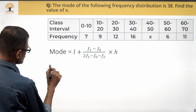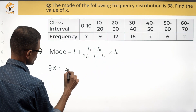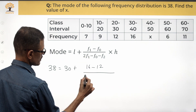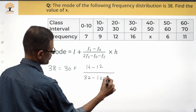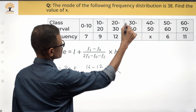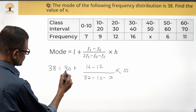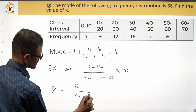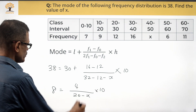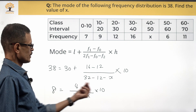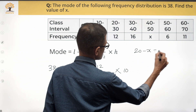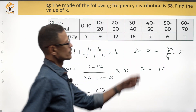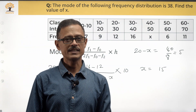So: 38 = 30 + [(16 − 12) / (2×16 − 12 − X)] × 10. That gives 8 = [4 / (32 − 12 − X)] × 10 = 40 / (20 − X). Taking 20 − X to the left: 20 − X = 40/8 = 5. Therefore X = 20 − 5 = 15. The frequency of the class after the modal class is 15, so the value of X is 15.